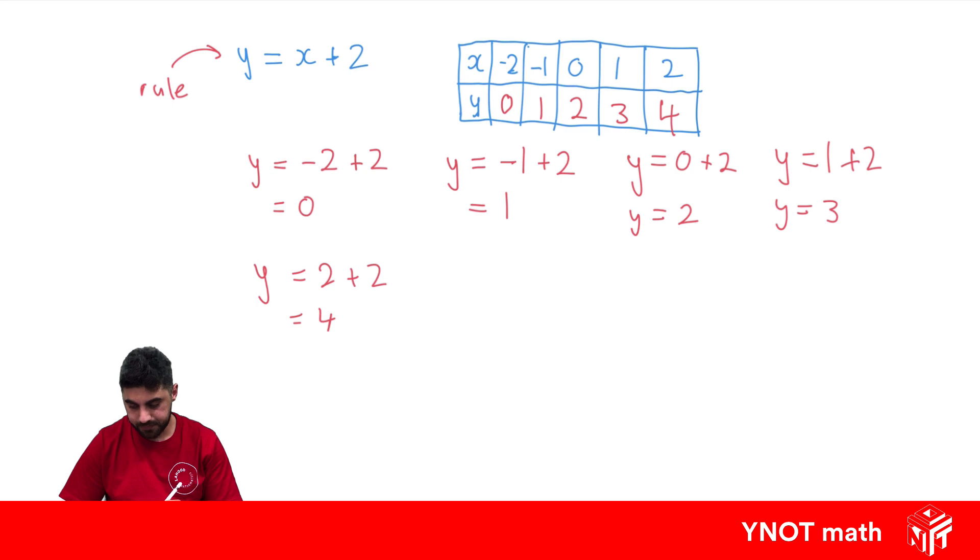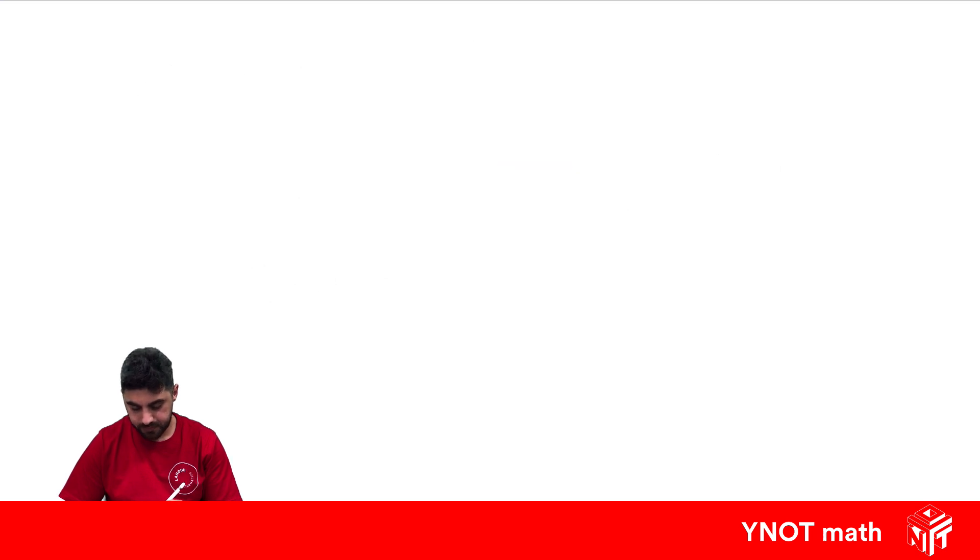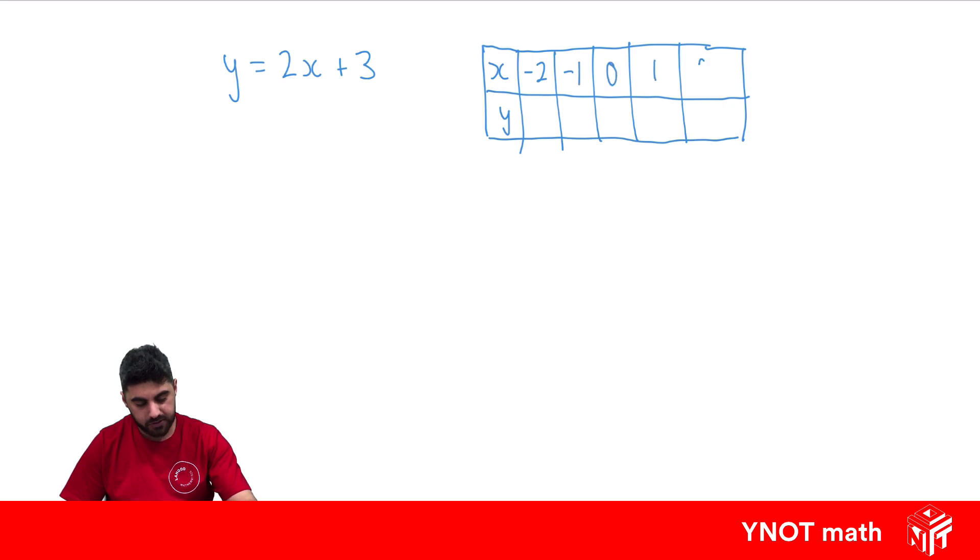Let's look at another one. Let's look at the rule y equals 2x plus 3. Let's make a table of values. So x at the top, y at the bottom. Let's make x equal to minus 2, minus 1, 0, 1 and 2.